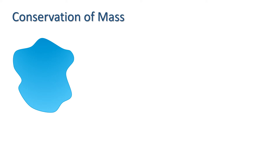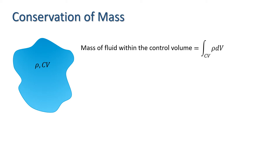Now let's consider an arbitrarily shaped control volume of fluid. I will take the density to be rho and denote the control volume as Cv. The mass of fluid within the control volume can be obtained by integrating over the control volume — we have the integral over Cv of rho dv. If the fluid is flowing, then the mass within the control volume may be changing. The rate of increase of mass is given by d/dt of the integral over Cv of rho dv.